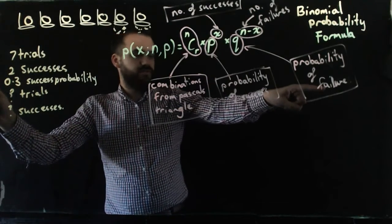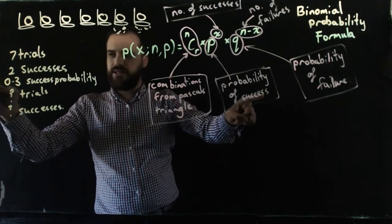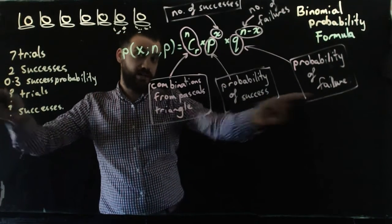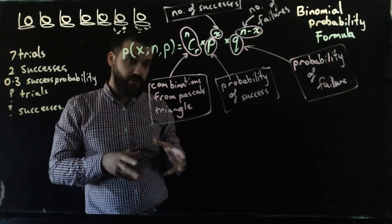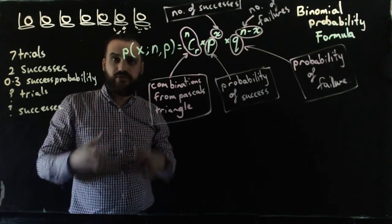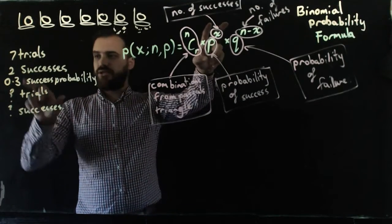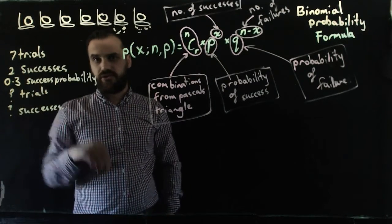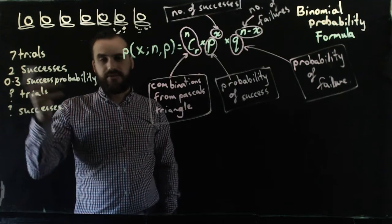Multiplied by the probability of failure. If the probability of success is 0.3, the probability of failure is the opposite of that, 0.7, or the complement of that, to the power of n minus x, which just stands for the number of failures. So if we're having two successes and we've got 7 trials, then the number of failures is 5.